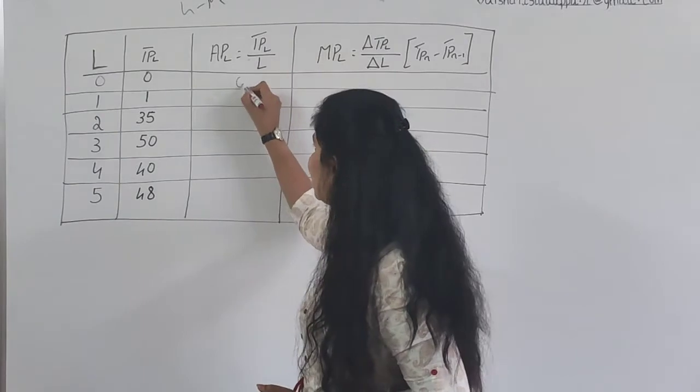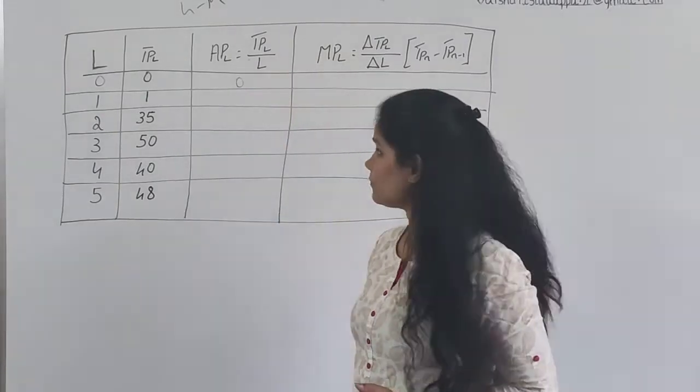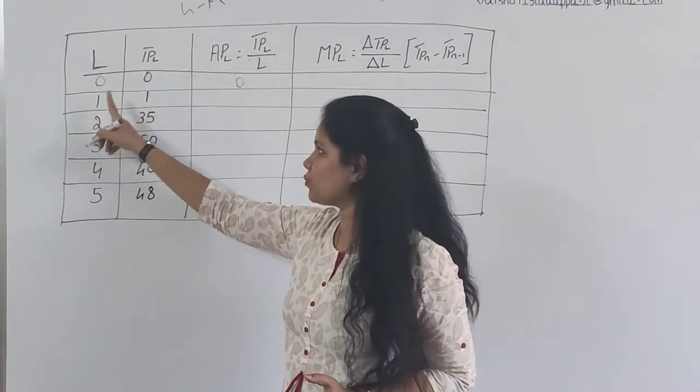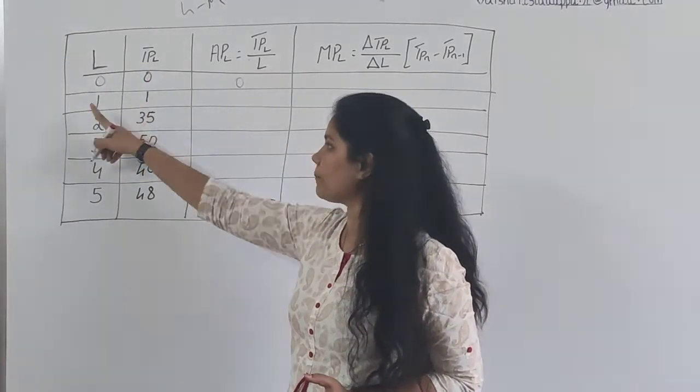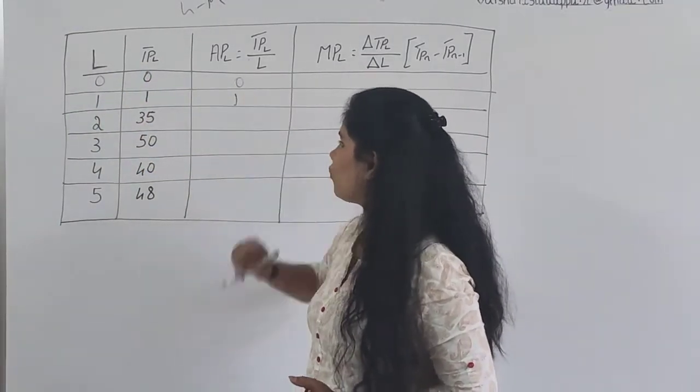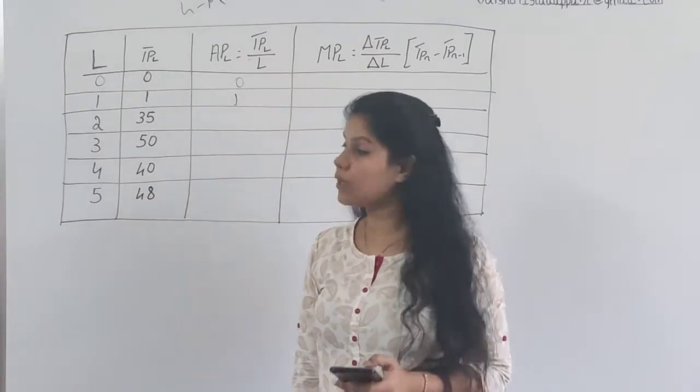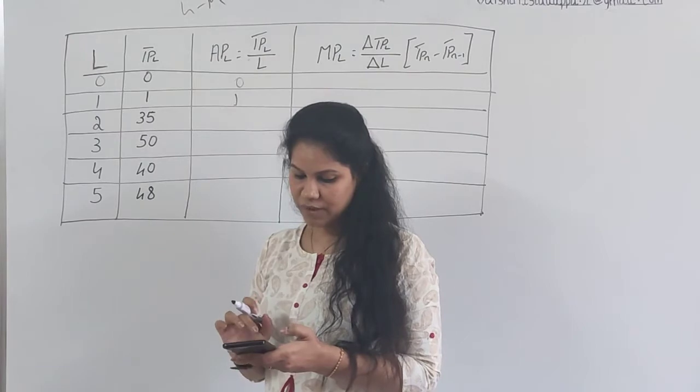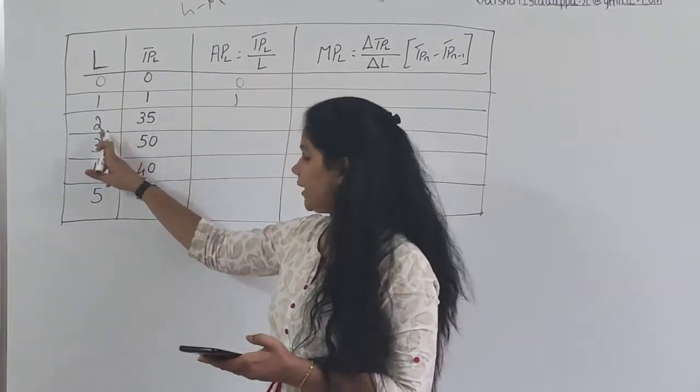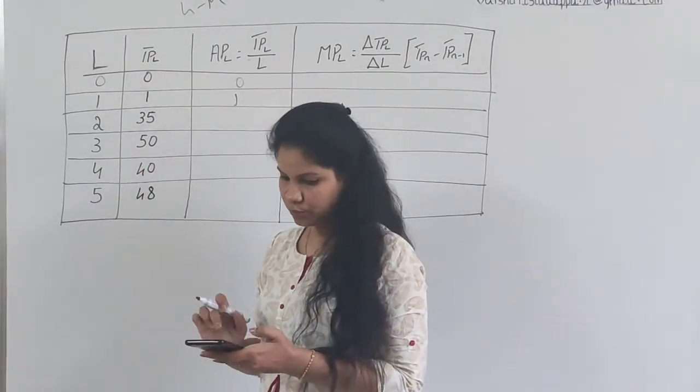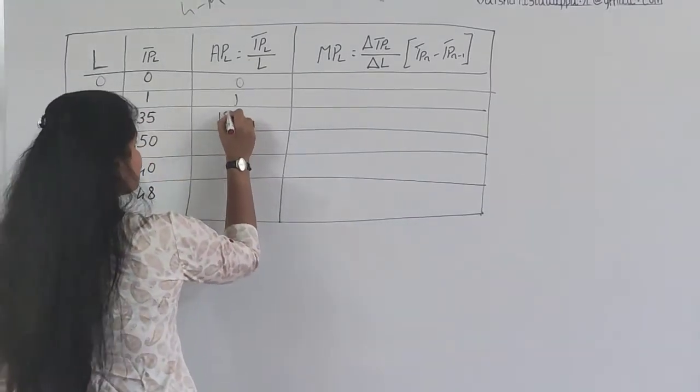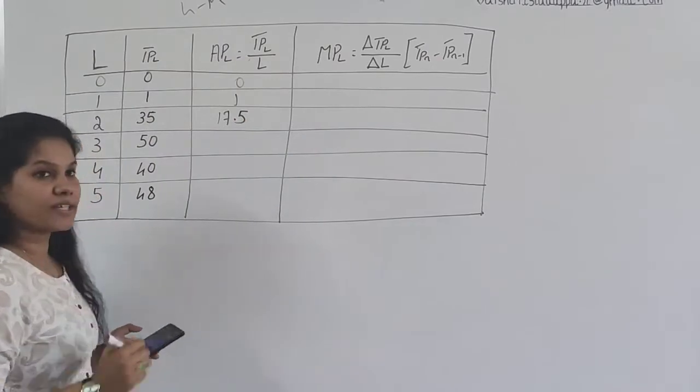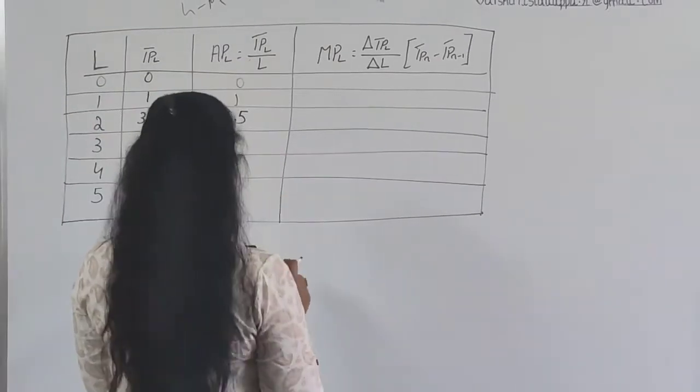You have 0 divided by 0, so the answer should be 0. TPL is 1 and L is 1, which is 1 divided by 1, so the answer is 1. Now 35 divided by 2, the answer is 17.5.